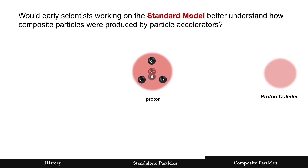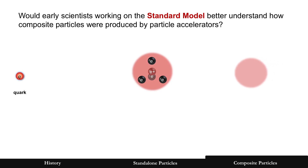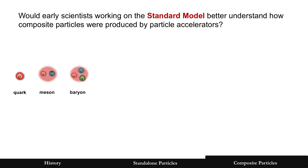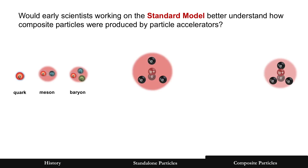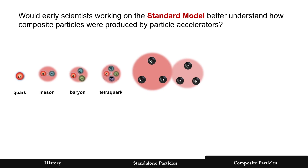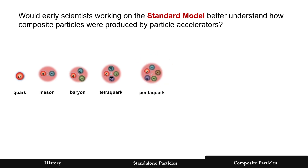The last question: would early scientists working on the standard model better understand how composite particles were produced by particle accelerators? Here are two protons colliding. The quark is almost like a rubber band that snaps back into place — hard to find in isolation. Assume proton collisions can eject the positron and electron, seen as a quark and antiquark — there's the meson. What remains? Three electrons, three quarks — that's the baryon. At higher energies and more recent discoveries, it's the tetraquark from two protons colliding and ejecting those central objects. And lastly, the pentaquark, which could be the true structure of the proton — four quarks and one antiquark.